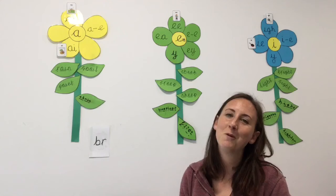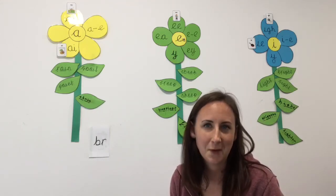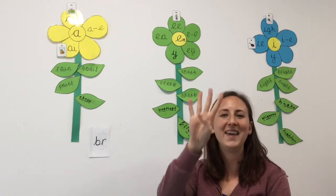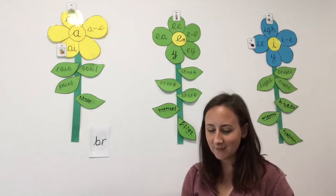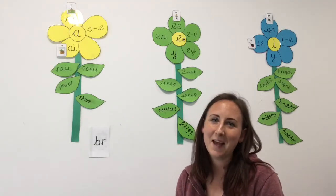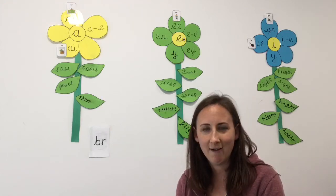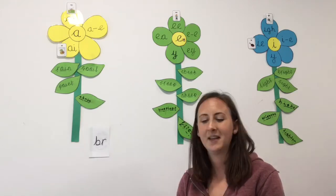So the first one has that trigraph in and the word is bright. Let's sound it out. Br-I-T. Bright. Four sounds. So on my board I'm going to do the sound buttons and remember that it's I for fly high. Br-I-T. Bright.